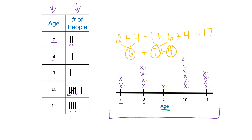And let me ask a follow-up question: how many ages are represented on this graph? Now we're talking about the ages again — there are 1, 2, 3, 4, 5 different ages represented on this graph.